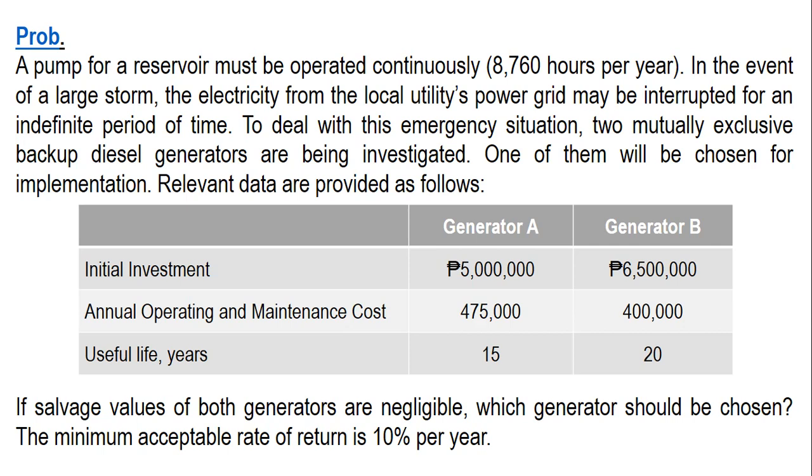For 15 and 20, the common number is 60. 60 can be divided by 15, the quotient is 4, and if we divide by 20, the quotient is 3. Therefore our study period here is 60 years.